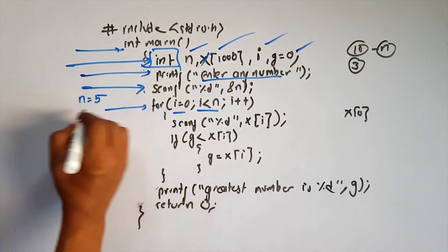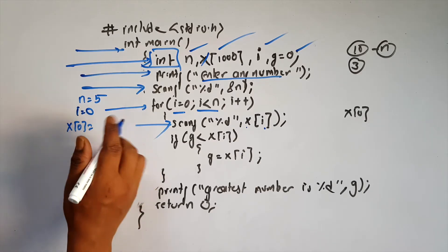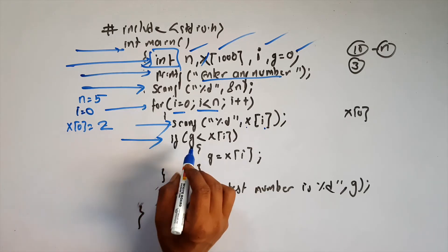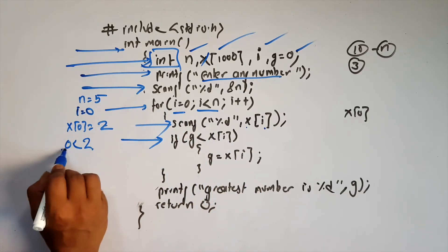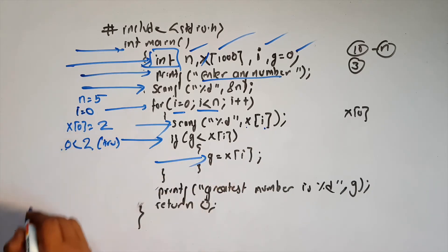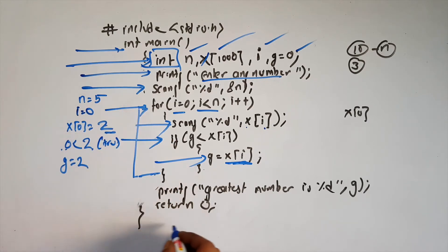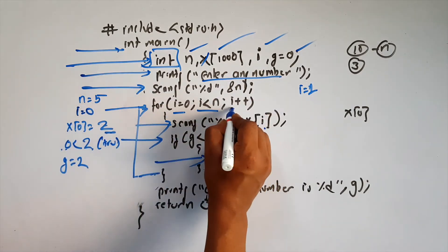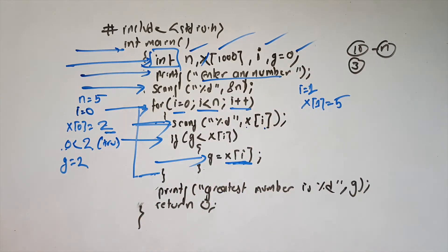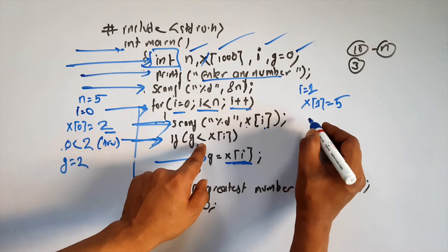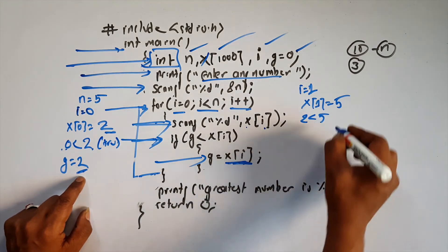5 is equal to 0. If i is equal to 0, we run the program. The input x is 0. The value of x is equal to 0. If g is less than x[i], x[i] is equal to 0, x equals 2. We run the condition. G is 2. Now: what condition? G is less than x1, x1 is here. Suppose the user enters 5 — 2 is less than 5, this is true.